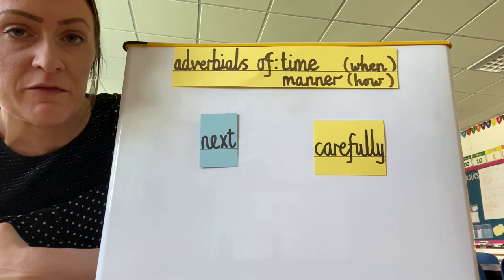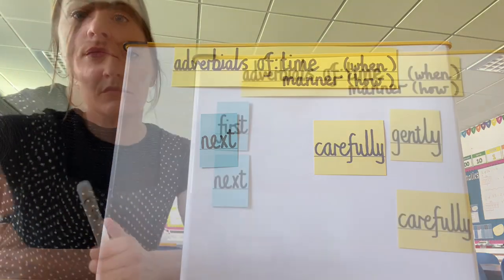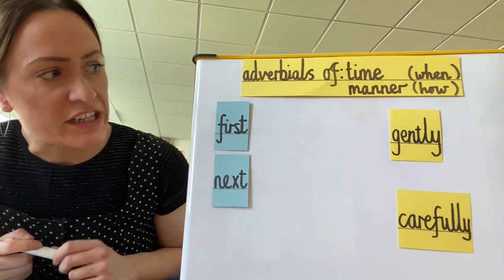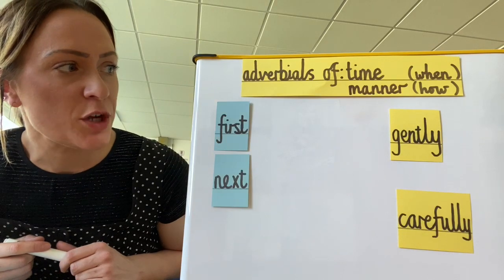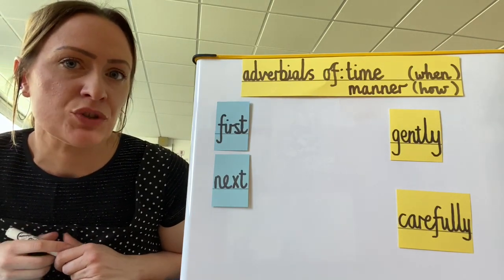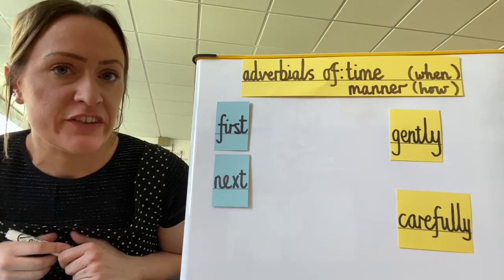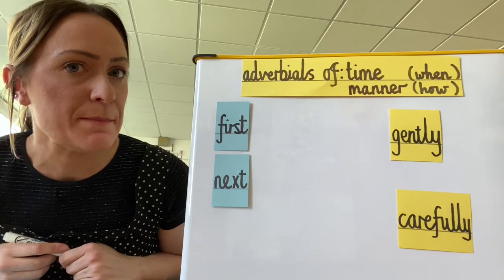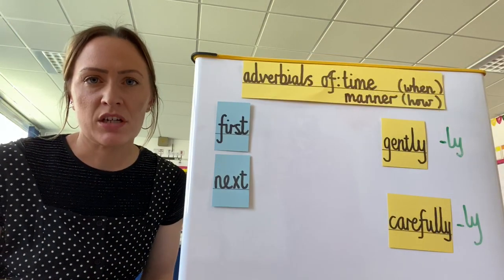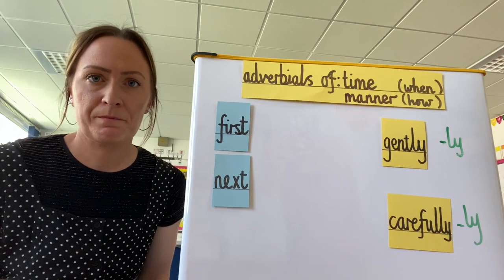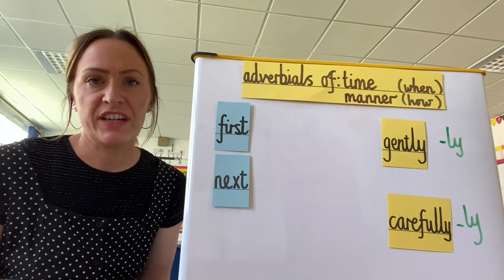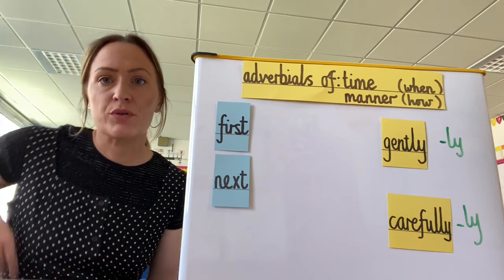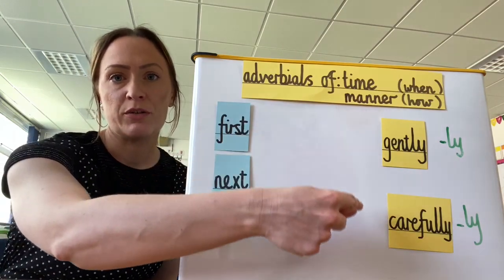If we delve deeper with these words, Year 2, we'll also notice something really important about our adverbials of manner. There is a particular spelling rule that we need to apply. Can you identify the suffix on both of those words? 'Gently,' 'carefully.' That's right — they both end with the suffix '-ly.' Pause the video and can you come up with some other examples of adverbials of time and some adverbials of manner for me?